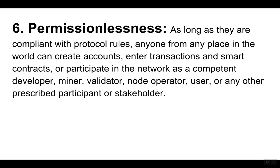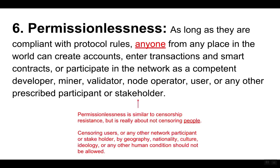Six, permissionlessness. As long as they are compliant with protocol rules, anyone from any place in the world can create accounts, enter transactions and smart contracts, or participate in the network as a developer, miner, validator, node operator, user or any other prescribed participant or stakeholder. Permissionlessness is similar to censorship resistance but it's really about not censoring people. Censoring users or any other network participant by geography, nationality, culture, ideology or any other human condition should not be allowed.